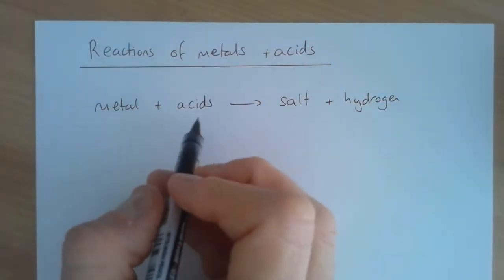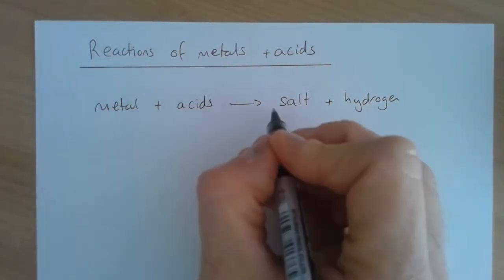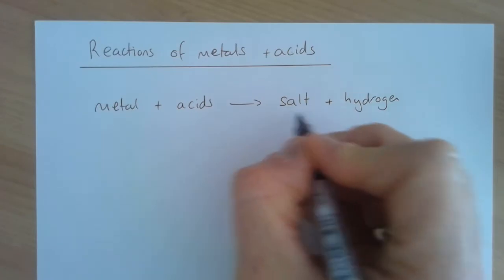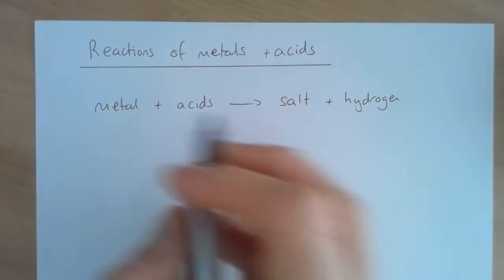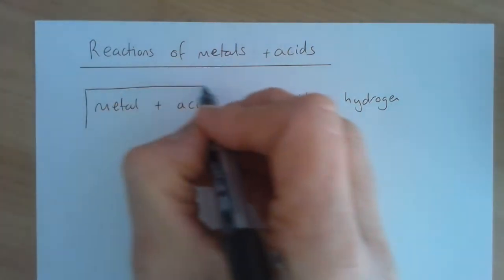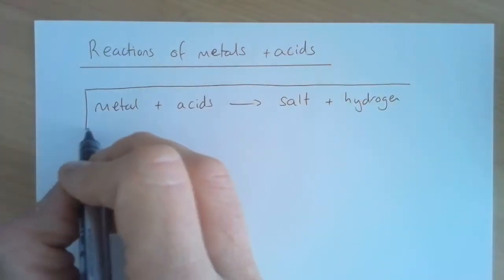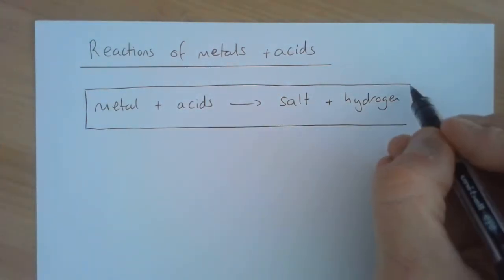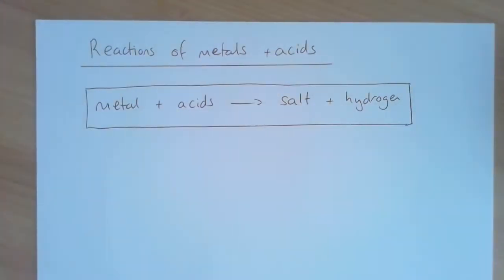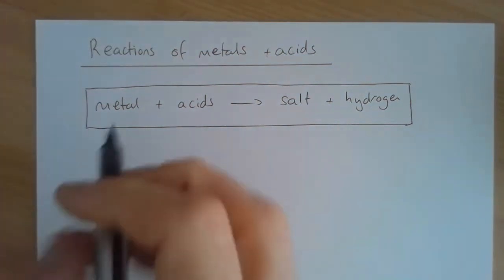The general equation is that a metal reacts with an acid to make something called a salt, which we'll talk about more in a minute, and hydrogen gas. In all of these reactions you would see bubbles of hydrogen gas being produced.